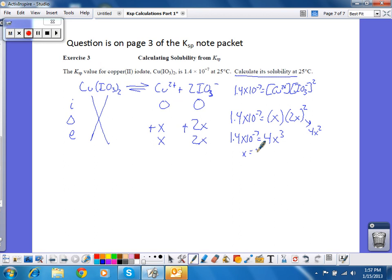And, solving for X, X is equal to 1.2 times 10 to the negative eighth. So, now I ask myself, what is X? X is the concentration of copper two plus ions. And, since I get one copper two ion for every copper two iodate, it is also the solubility. So, I have finished that question as well.